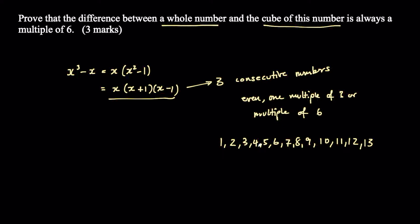If you pick any three consecutive numbers — remember, consecutive means numbers in a row — for example, if x equals two, those three consecutive numbers are one, two, three. Three is a multiple of three and two is an even number. If you multiply an even number by a multiple of three you always get a multiple of six, so this expression must represent a multiple of six.